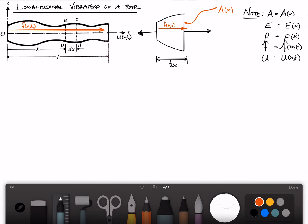What we have in the figure is a bar of arbitrary cross-sectional area. In general, this can vary. The x-axis is set up to be along the main axial direction of the bar, and displacements in this direction we'll call u.